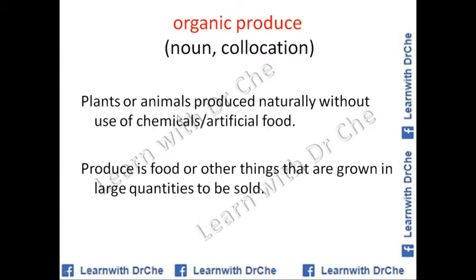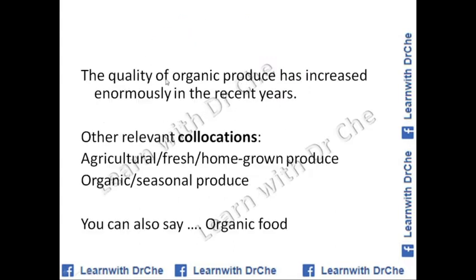The quality of organic produce has increased enormously in recent years. Collocations include: agricultural produce, fresh produce, homegrown produce, and seasonal produce. We can also say 'organic food' instead of 'organic produce.'